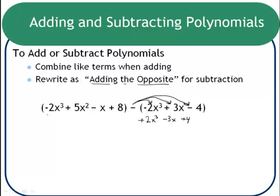This first polynomial here, that does not need to be changed. It's not being subtracted. It is the thing that we are subtracting from. And so it will stay, the signs will stay the same. You could rewrite them again, negative 2x cubed and 5x squared, negative x and 8 if you want. I usually don't bother.